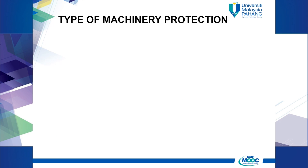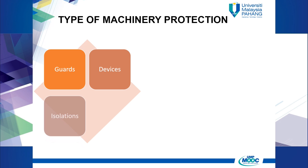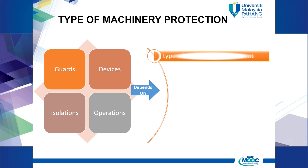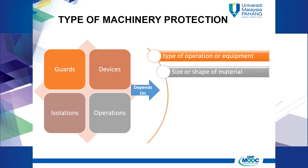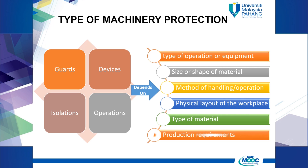There are basically four types of machinery protection: number one, guards; number two, devices; number three, isolations; and number four, operations. The selection of machinery protection depends on the type of operation or equipment, size or shape of material, method of operation, physical layout of the workplace, type of material, and production requirements.